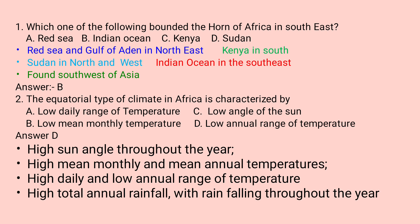The Horn of Africa is bounded by the Red Sea and the Gulf of Aden in the North-East, by Kenya in the South, by Sudan in the North and West, and by the Indian Ocean in the South-East. So the answer is B — the Indian Ocean bounded the Horn of Africa in the South-East.